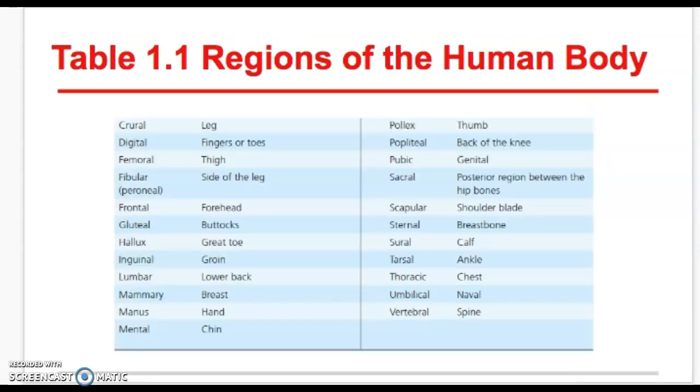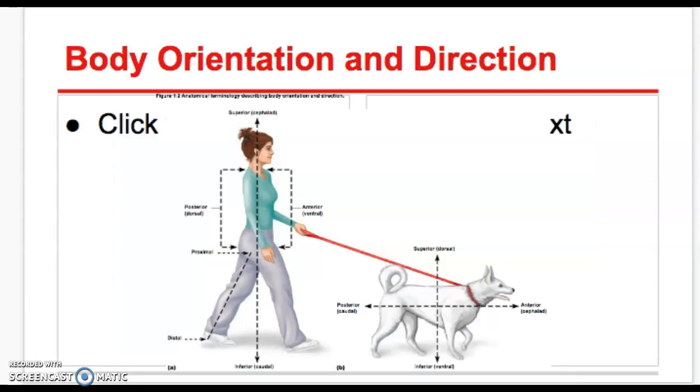So directional terms. We have anterior and posterior. So anterior, again, as we're talking about in standard anatomical position, what we think of as the front of the body. Posterior is the back of the body. We can also use ventral. Ventral would be the front and dorsal is the back. We have superior, which is anything that's above. Inferior is anything that's below.